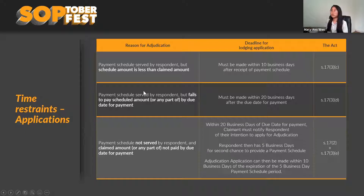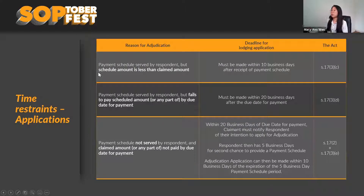The purpose of the Act is to facilitate quick payment for contractors, so failure to comply with time constraints may affect your ability to lodge an adjudication application. Running through the three scenarios: if a payment schedule has been served and it's less than the claimed amount, you must lodge your application within 10 business days after you receive the payment schedule.